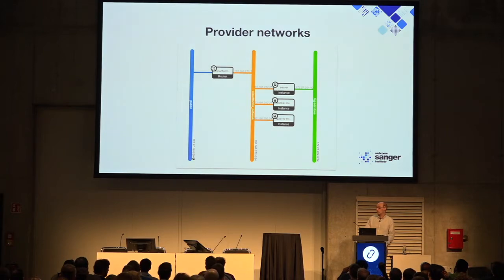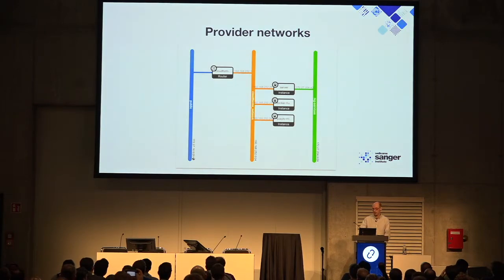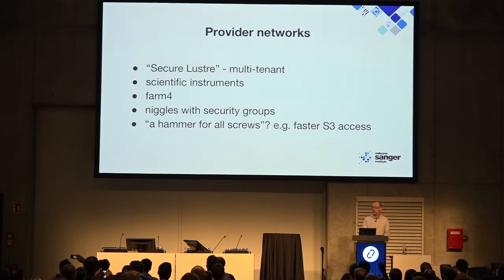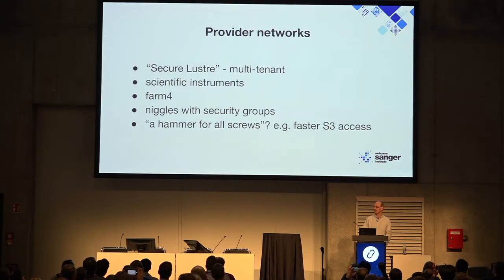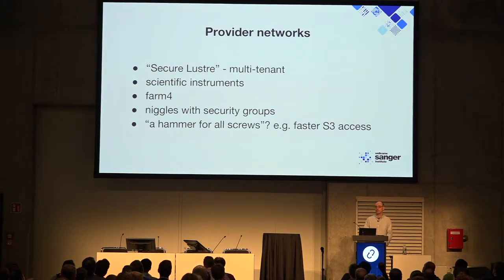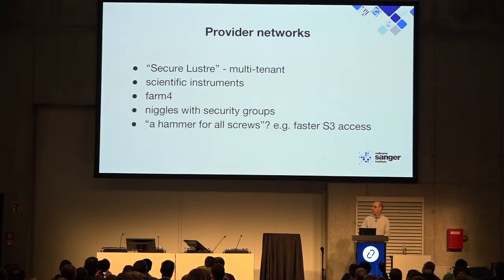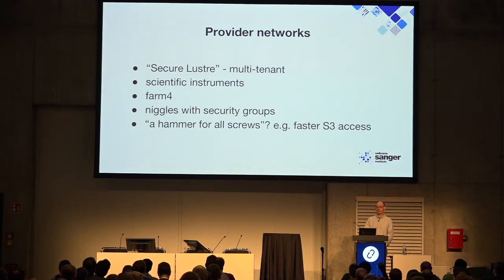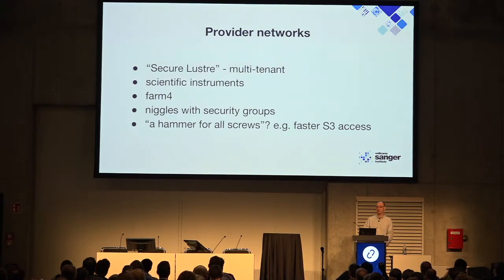We use provider networks quite a lot. For anyone who hasn't met them, it's basically plugging a VLAN into the back of your OpenStack so you can hang anything off there — a file server, a database, some piece of hardware. We use it for Secure Lustre, for networks connected to scientific instruments like sequencing machines and microscopes, and for Farm 4 — the fourth incarnation of our LSF batch compute farm, which is actually virtual, running as instances inside OpenStack, plugged to a provider network so it looks like it's on the Sanger internal network.